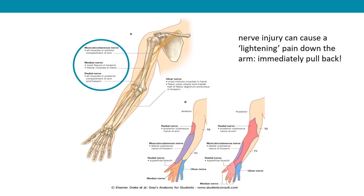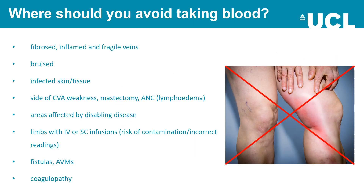You should avoid taking blood from veins that are fibrosed, inflamed and fragile, bruised areas, or infected skin and tissue; the side of a stroke, mastectomy, or axillary node clearance because of the risk of lymphedema; areas affected by disabling disease; limbs with IV or subcutaneous infusions because of the risk of contamination and incorrect readings; and fistulas, arteriovenous malformations, and coagulopathy.